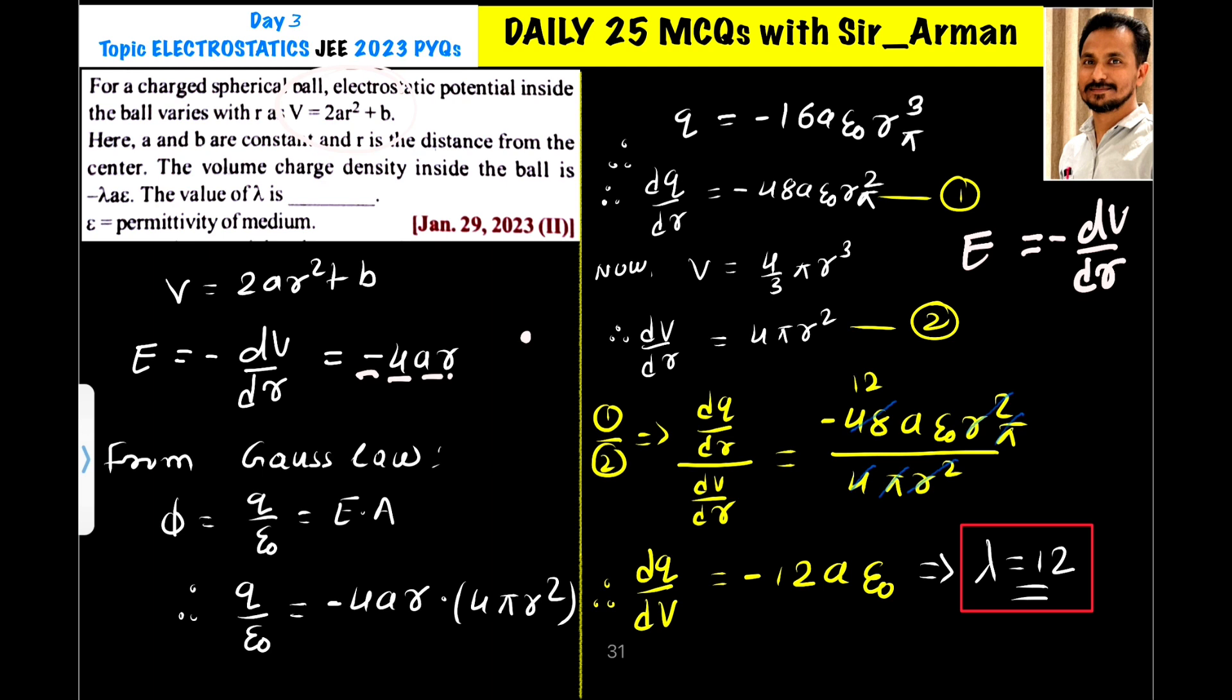Now, what we want? As already I have said, we want density, that is dρ equals dQ by dV. This we want. So here we have dQ by dR, here we have dV by dR. So if we take ratio of these two terms, then dR dR will get cancelled.